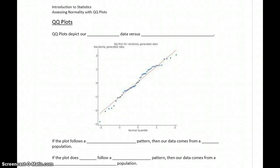To assess the normality of our sample data, we're going to introduce a new tool, a new type of graph called a QQ plot, where QQ stands for quantile, quantile.